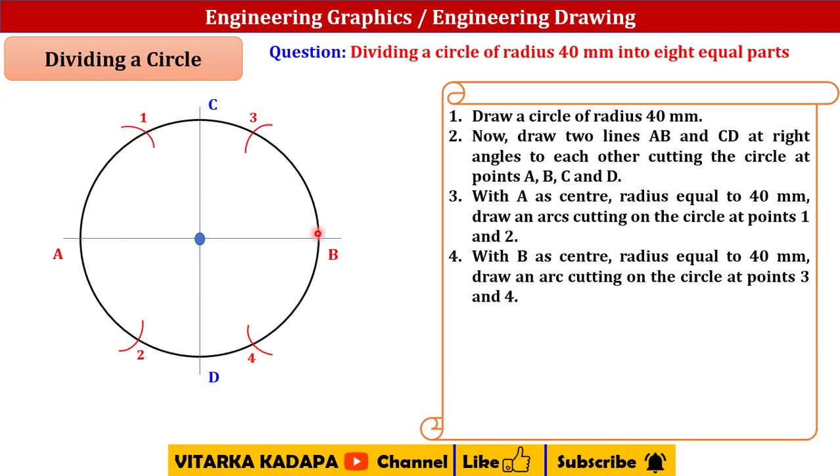Similarly now go to C as a center and with the same radius draw an arc cutting the points on both sides of C onto the circle. Here I can cut it as 5 and here as the sixth point.